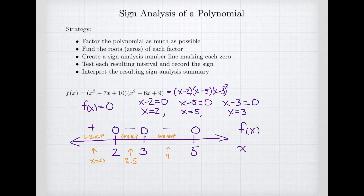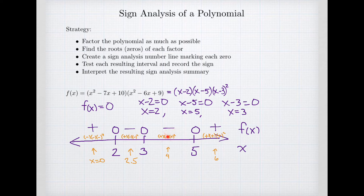For the final interval with x values bigger than 5, we might pick x equals 6. When I do that, all of my factors are positive. There are four positive factors, and when I multiply those together I get a plus. That's my sign analysis summary: plus, minus, minus, plus. The reason we didn't change sign at 3 is because that factor was squared — it's always positive — so when it changed from a negative factor to a positive factor, the square of it didn't change sign.